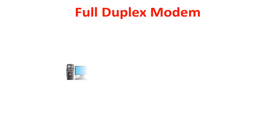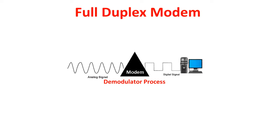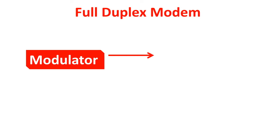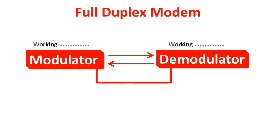The full-duplex modem is different from the half-duplex modem — it can transmit data in both directions simultaneously. At the same time, it transmits data from a digital device to a network setup using the modulator process, converting digital data into analog signal, and from the network setup to the digital device using the demodulator mechanism, converting analog signal to digital data. The full-duplex modem supports two-way conversation and performs both processes simultaneously, unlike the half-duplex modem.